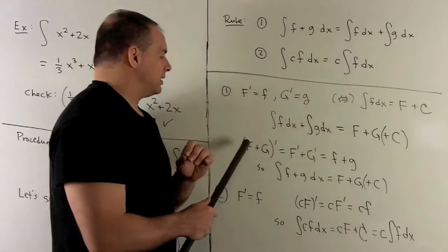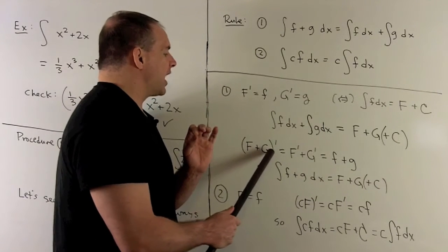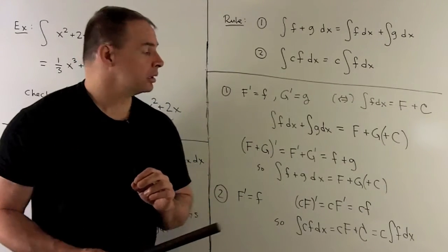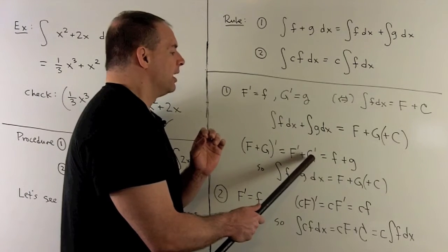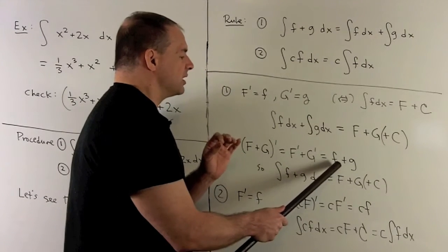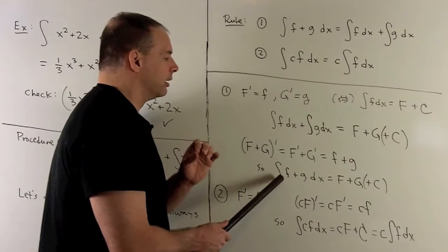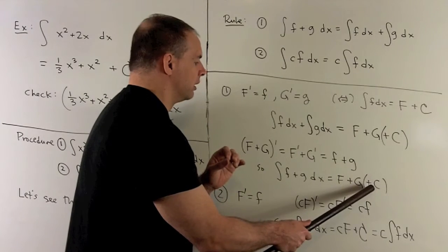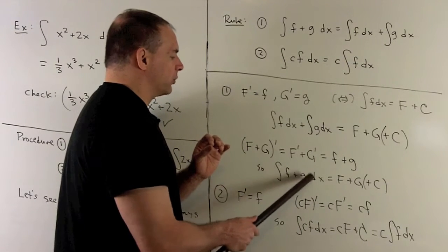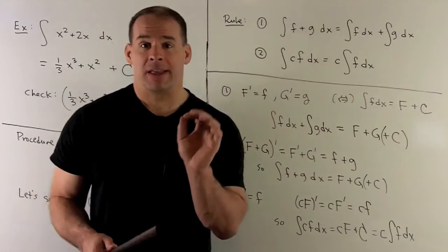Another thing we can do: take capital F plus capital G and take the derivative. One of our derivative rules says that to take the derivative of a sum, you take the derivative of each term and add them together. So that equals F prime plus G prime. F prime equals little f, G prime equals little g. So if we consider F plus G as one term, that says the indefinite integral of f plus g equals capital F plus capital G plus a constant of integration.